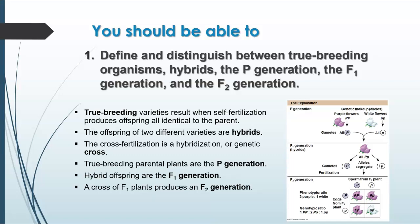These are terms that Mendel introduced to us, and we still use them today. The true breeding varieties are the result of self-fertilization, and they're going to be homozygous — either homozygous dominant or homozygous recessive. When you cross two different true breeding varieties, you're going to get a hybrid. A hybrid is going to have one dominant allele and one recessive allele. The fertilization is basically a hybridization or cross, and then the parents that were true breeding to begin with — like in Mendel's case with the purple flowers and the white flowers — those are the parent generation. Their direct offspring are called the F1 generation.